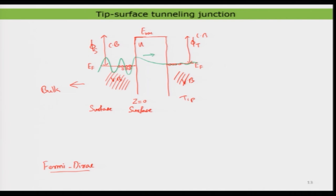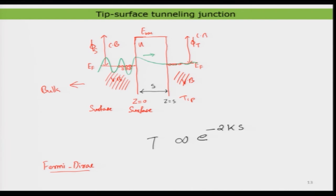The distance between the tip and the sample — let us call it s, at z equal to s — is quite important because the tunneling probability defines the effectiveness of the tunneling. It is proportional to e raised to minus 2ks, where s is the distance and k is a decay constant strongly related to the energy of the electron and the barrier height. The tunneling probability is an exponential function strongly dependent on distance and barrier height.